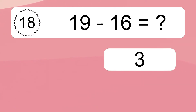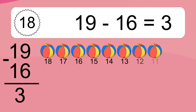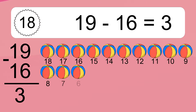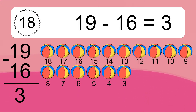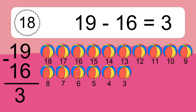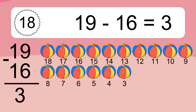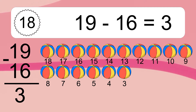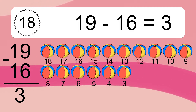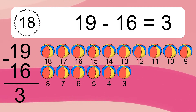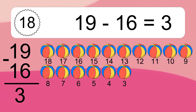19 minus 16 equals 3. Let's count it. 18, 17, 16, 15, 14, 13, 12, 11, 10, 9, 8, 7, 6, 5, 4, 3.